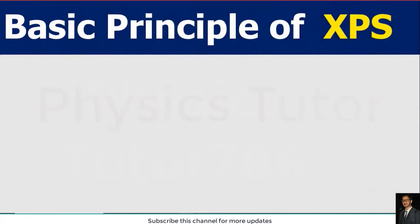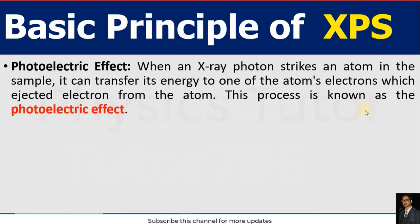Now we will study the basic principle of XPS. XPS is a characterization technique that uses the photoelectric effect. When an X-ray photon strikes an atom in the sample, it transfers its energy to one of the atom's electrons, which ejects that electron — this process is known as the photoelectric effect. As seen in the diagram, when a photon of particular wavelength is incident on a surface, it ejects electrons because X-rays are electromagnetic rays with short wavelength and high energy, which is absorbed by the electrons.